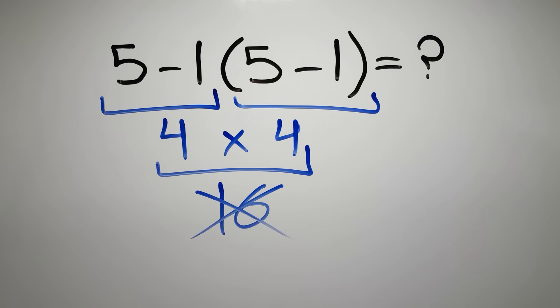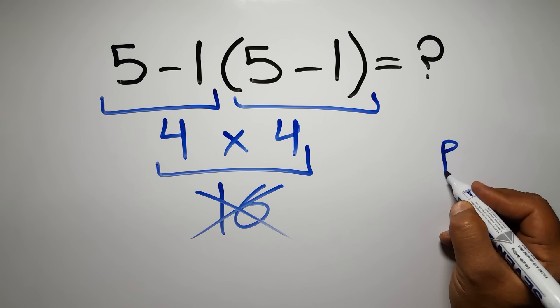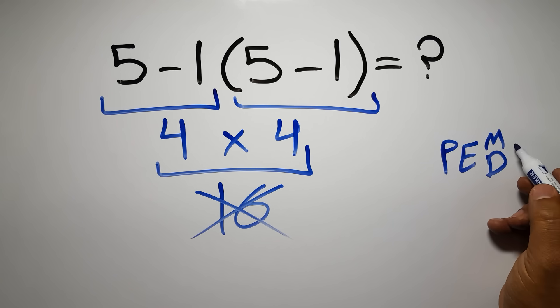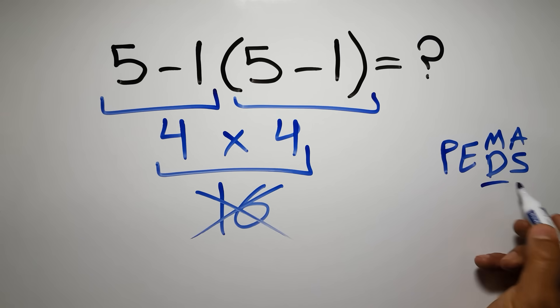Because according to the order of operations, first we have to do parentheses, then exponents, then multiplication or division, and finally addition or subtraction. Remember that multiplication and division have equal priority, and we have to work from left to right, and the same applies to addition and subtraction.